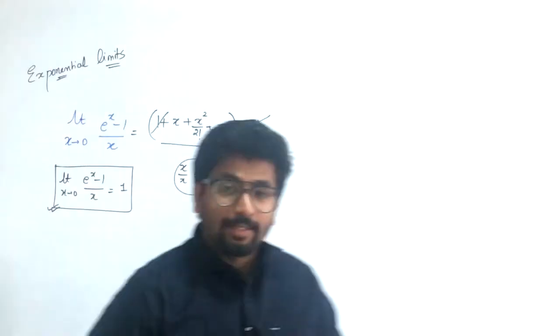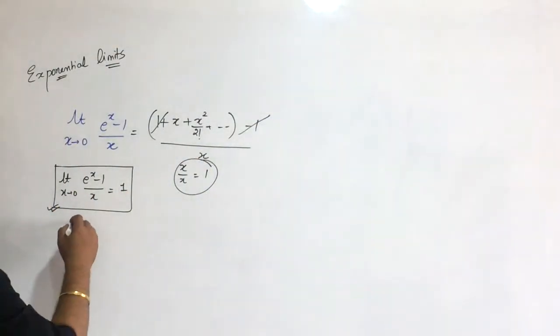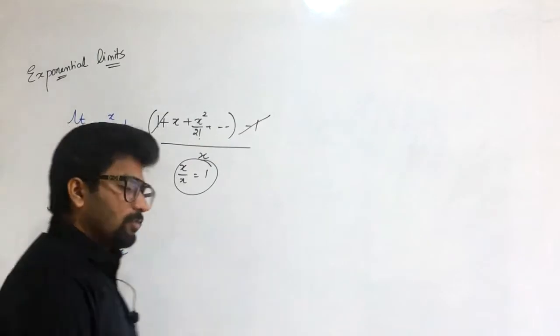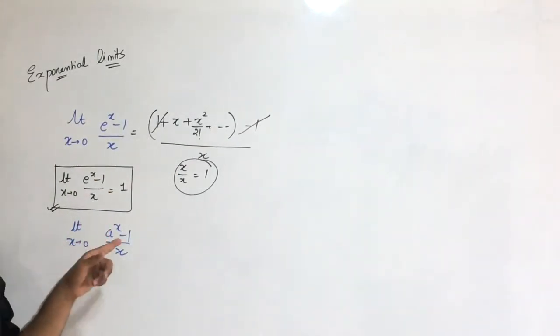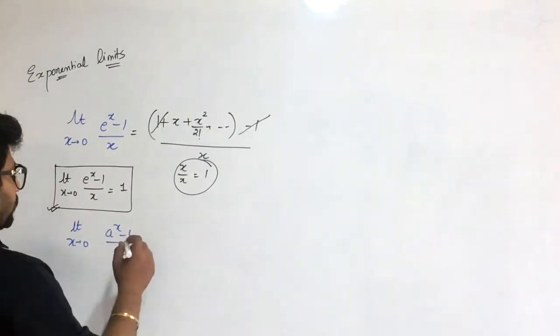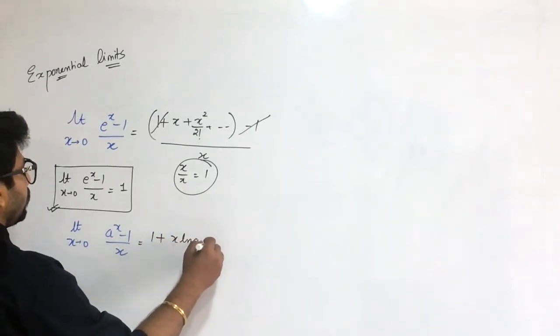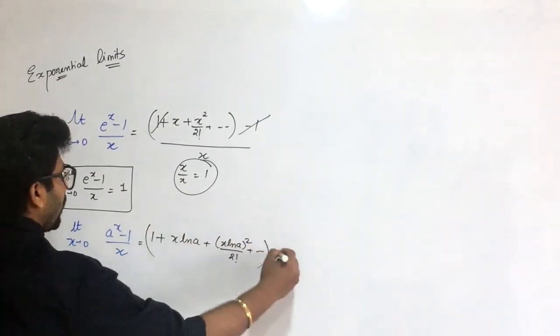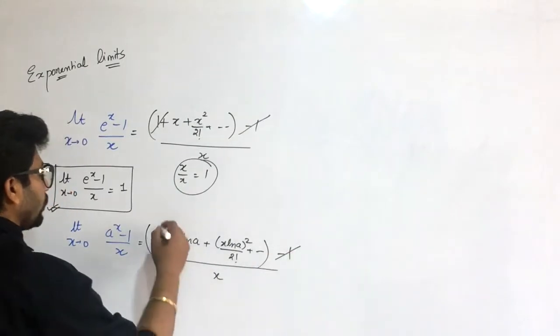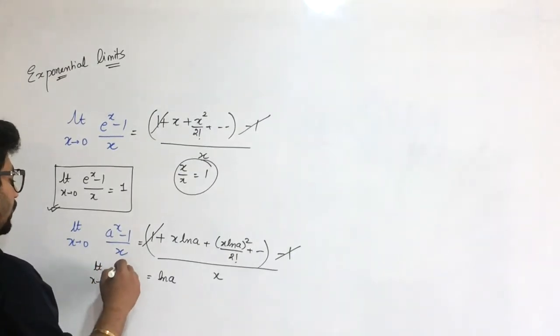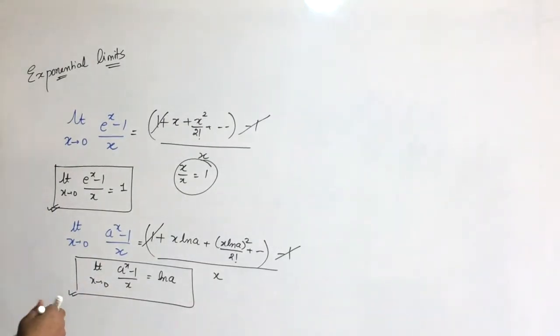Next result: limit x approaches 0 of a raised to power x minus 1 upon x. Same way we proceed. a to the power x can be written as e raised to power x ln a. Using expansion, this becomes 1 plus x ln a plus x ln a whole square by 2 factorial and so on, minus 1, upon x. This simplifies to ln a. So remember: limit x approaches 0 of a raise to power x minus 1 upon x is ln a. Very important result.